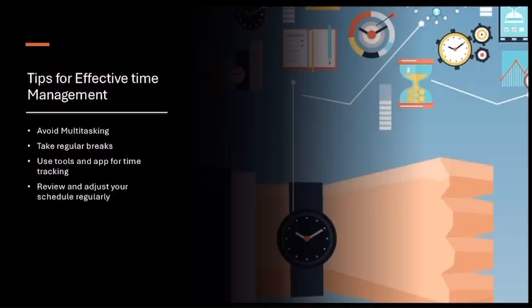These are tips for effective time management: avoid multitasking, take regular breaks, use tools and apps for time tracking, review and adjust your schedule regularly. If you're focused on assignments, avoid multitasking like taking breaks to get on your phone. If you're on a hard assignment, take breaks so you won't stretch yourself out. Make sure you use tools and apps to stay on track of everything, on top of your work, on the due dates, and adjust your schedule regularly.